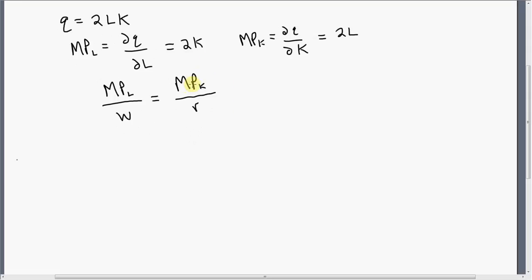So all we're going to do now is substitute 2K in for the marginal product of labor, and 2L in for the marginal product of capital.